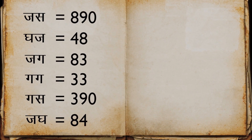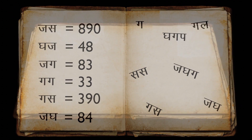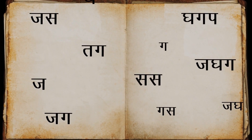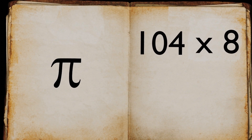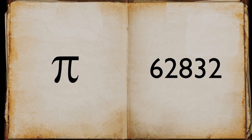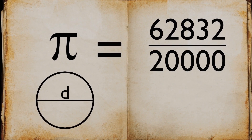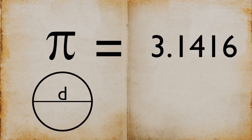From there, the positional number system was used and they could write positional numbers. Later, when Aryabhata was doing calculations with these numbers, he found the approximate value of pi. He wrote in the second part of his book Aryabhatiya: add 4 to 100, multiply by 8, and then add 62,000. By this rule, the circumference of a circle with diameter 20,000 can be approached, giving the value of pi as 3.1416, which is accurate to three decimal places.